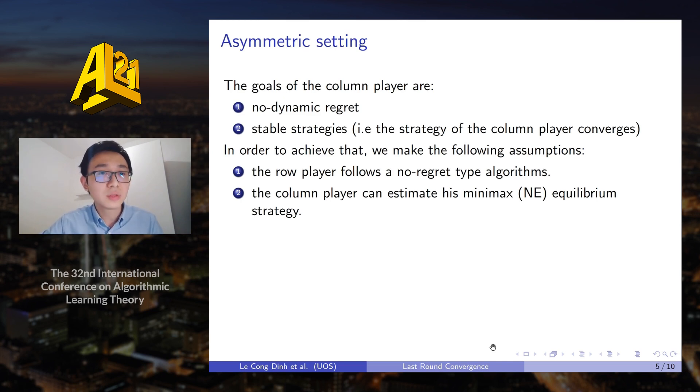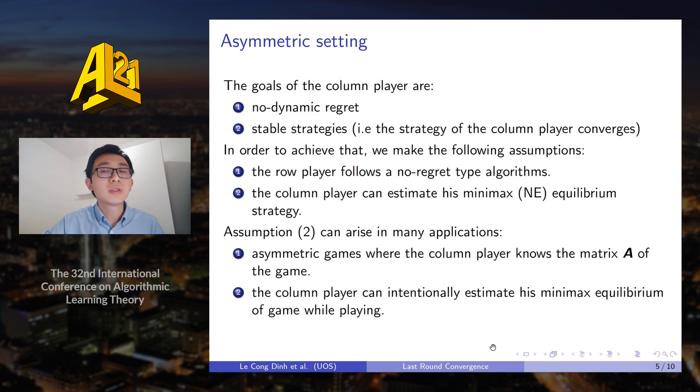The second assumption is that the column player can estimate his min-max or the Nash equilibrium of the game. So this assumption can arise in many applications in practice. It can arise in asymmetric games when the column player knows the matrix of the game and can use some techniques such as linear programming or self-play in order to estimate his min-max equilibrium.